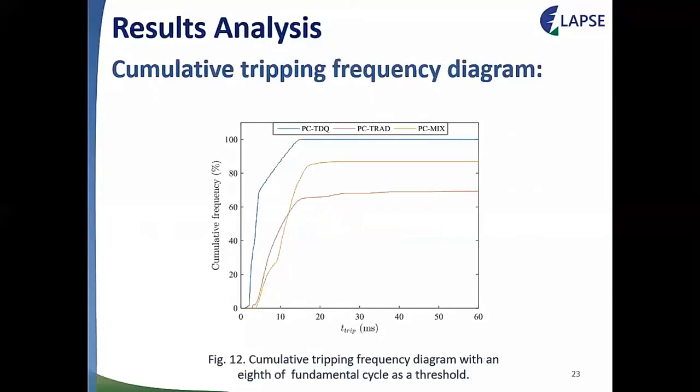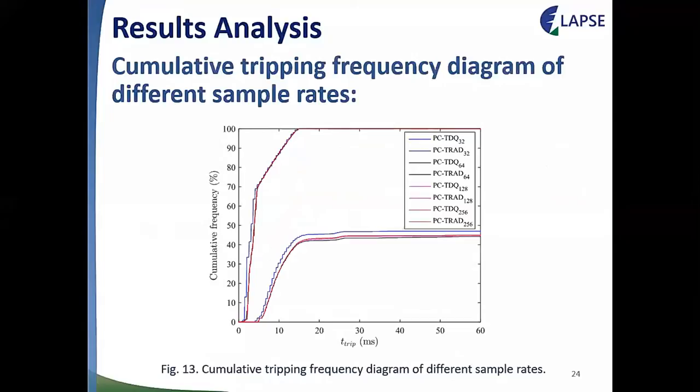To better compare the functions for the same cases, simulations were also carried out using a threshold of one-eighth of a cycle for all analyzed functions. It can be seen that the traditional PC protections had superior performance with a lower threshold, but the literature suggests using one-quarter cycle for safe operation, avoiding improper operation in adverse cases. Thus, these results prove the effectiveness of the proposed function, showing its safety and confirming that the TDQ approach indeed reduced tripping time.